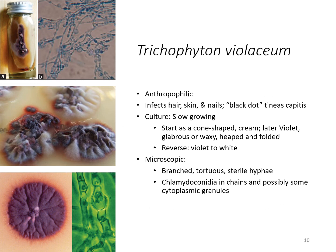Trichophyton violaceum is transmitted man to man, primarily seen in the Mediterranean region, the Middle and Far East, and in Africa. It infects the hair, skin, and nails. It is slow growing. It starts as a cone shape that's cream colored, and then as it ages, it turns to a pretty violet color. It can be waxy in appearance and then also very heaped and folded — the image shows how they kind of look like mountains, and then you see that real pretty violet color.